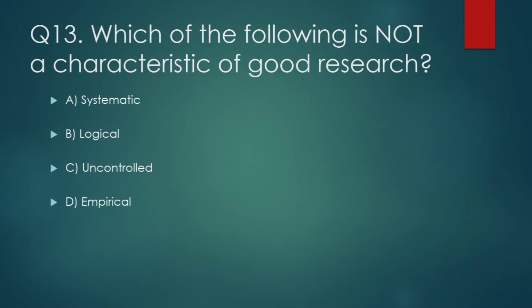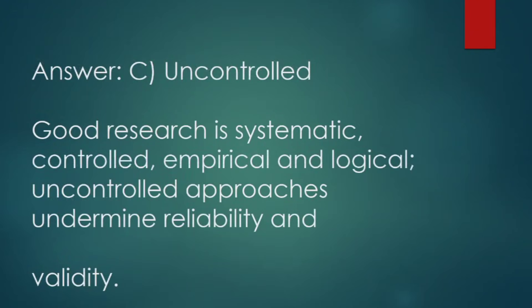Which of the following is not a characteristic of good research? Options: (A) systematic, (B) logical, (C) uncontrolled, (D) empirical. Correct answer: uncontrolled. Good research is systematic, controlled, empirical, and logical. Uncontrolled approaches undermine reliability and validity.